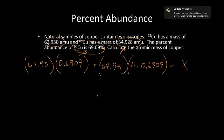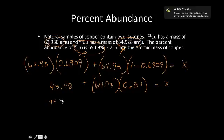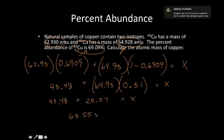Working through the math: 62.93 times 0.6909 equals 43.48. Then 1 minus 0.6909 equals 0.31, so 64.93 times 0.31 equals 20.07. Adding those together: 43.48 plus 20.07 equals 63.55, and that equals X.